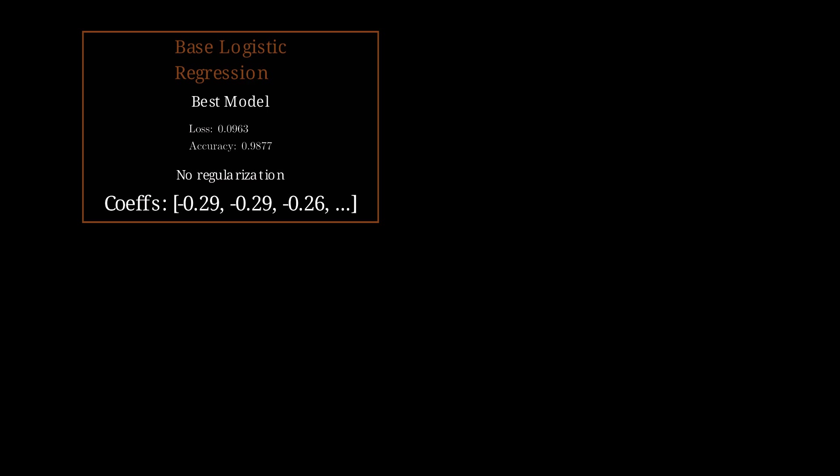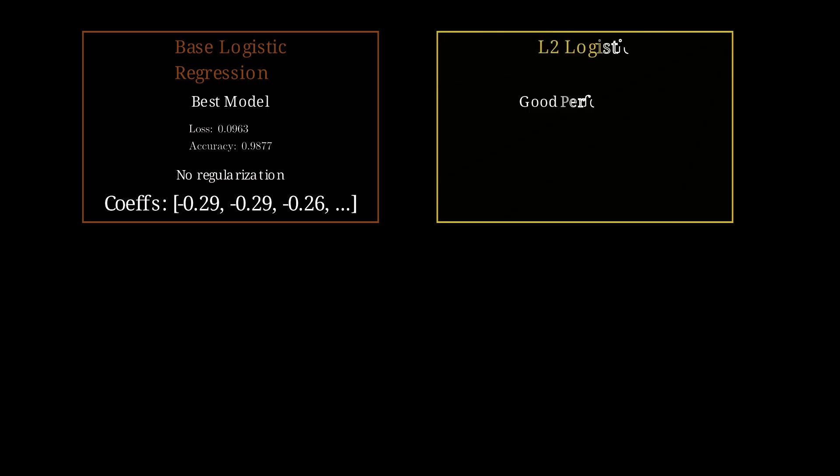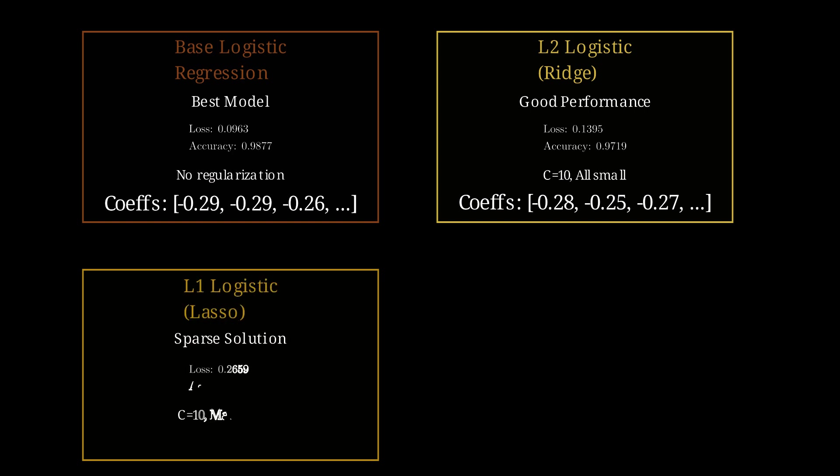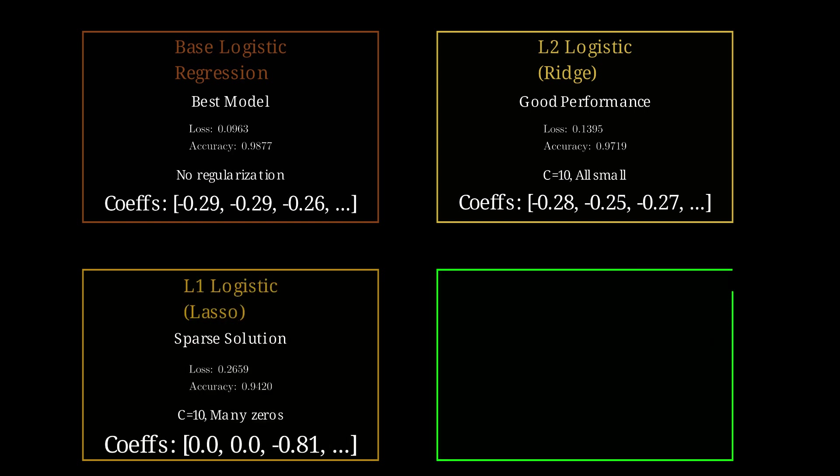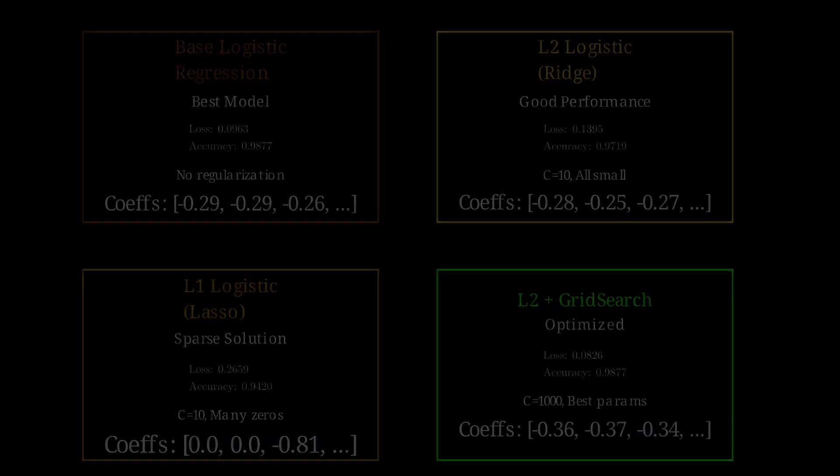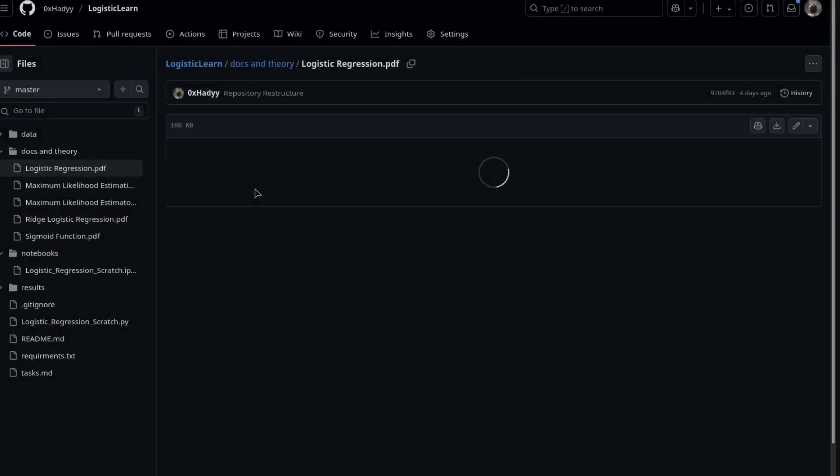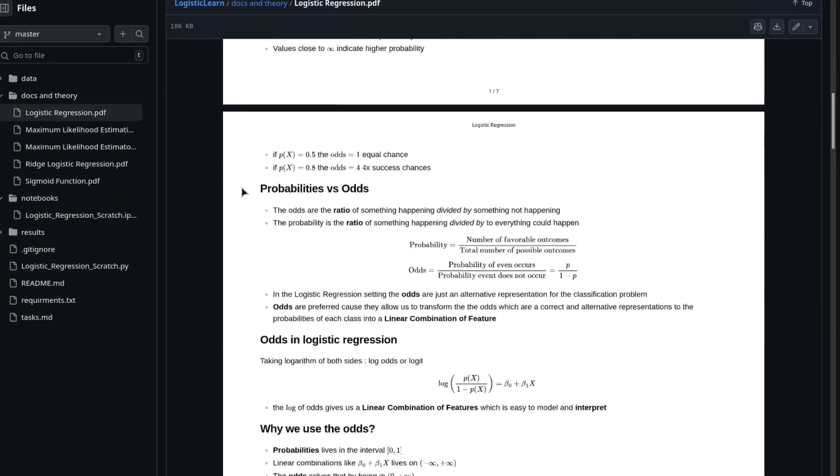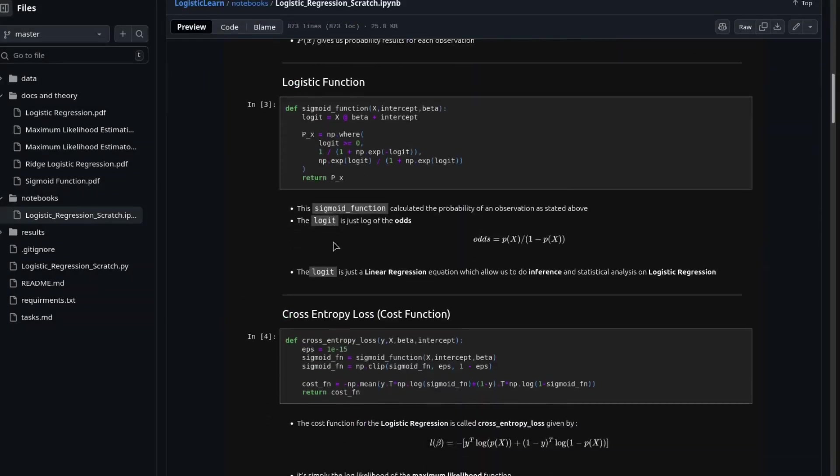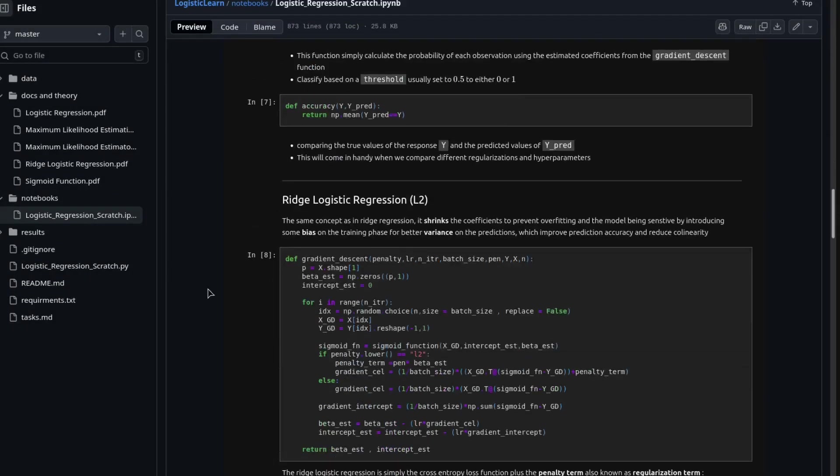And we can notice that the drop in accuracy in the L2, and the L1 gives us a sparse model and set some coefficients to zero. And the grid search selected the best possible combination of C and learning rate values for the L2 logistic regression, all as expected. And for more details and class-based implementation and theory maths and everything related to logistic regression, check the repository, the GitHub repository in the description. And thanks for watching.